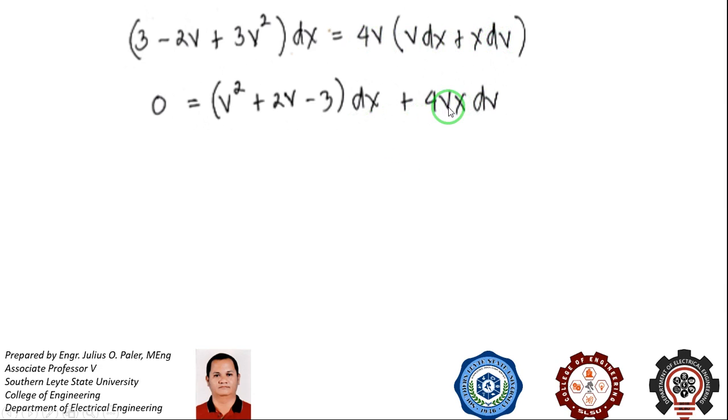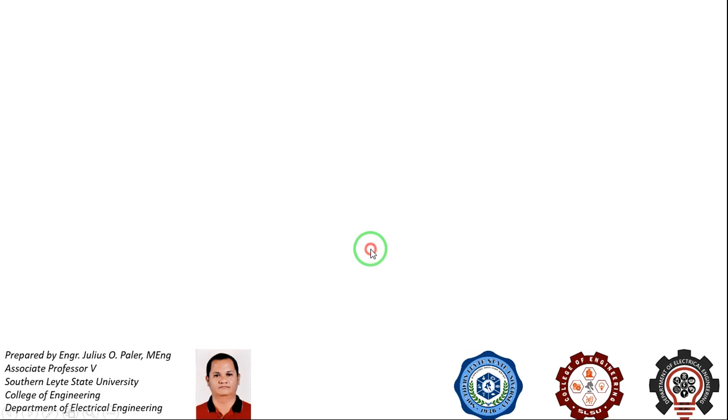Now, looking at the equation, we can separate the variables and rearranging will give us dx/x + 4v/(v² + 2v - 3)dv = 0. Now, the first term is okay. Second term, however, suggests reduction to partial fraction.